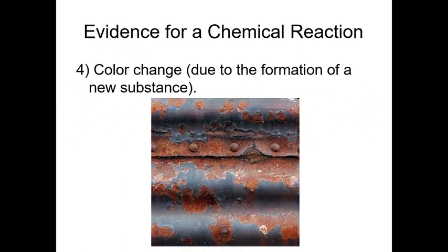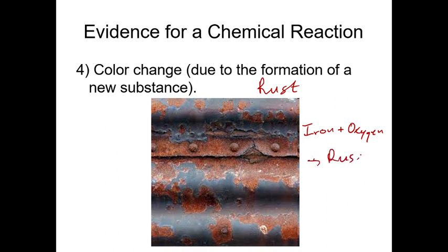The fourth evidence of a chemical reaction is color change. When a chemical reaction takes place, the color usually changes due to the formation of new substances. For example, with rust — iron reacts with oxygen in the presence of moisture to form rust. The color of the iron changes, and that is a good example of how a chemical reaction has taken place.